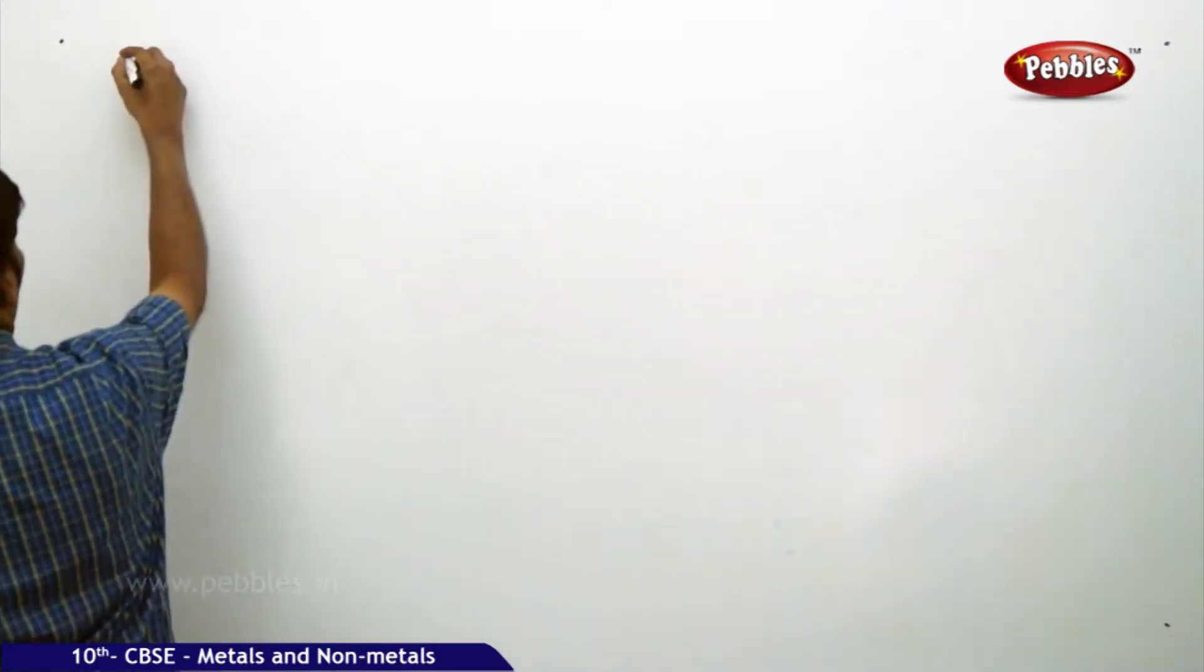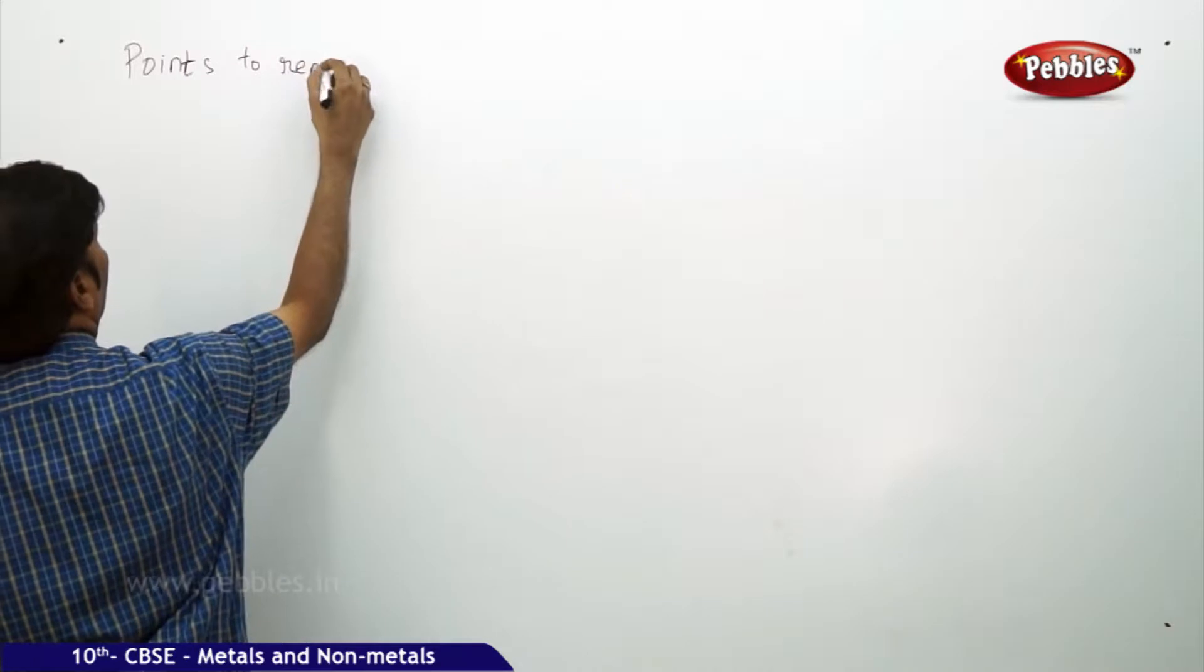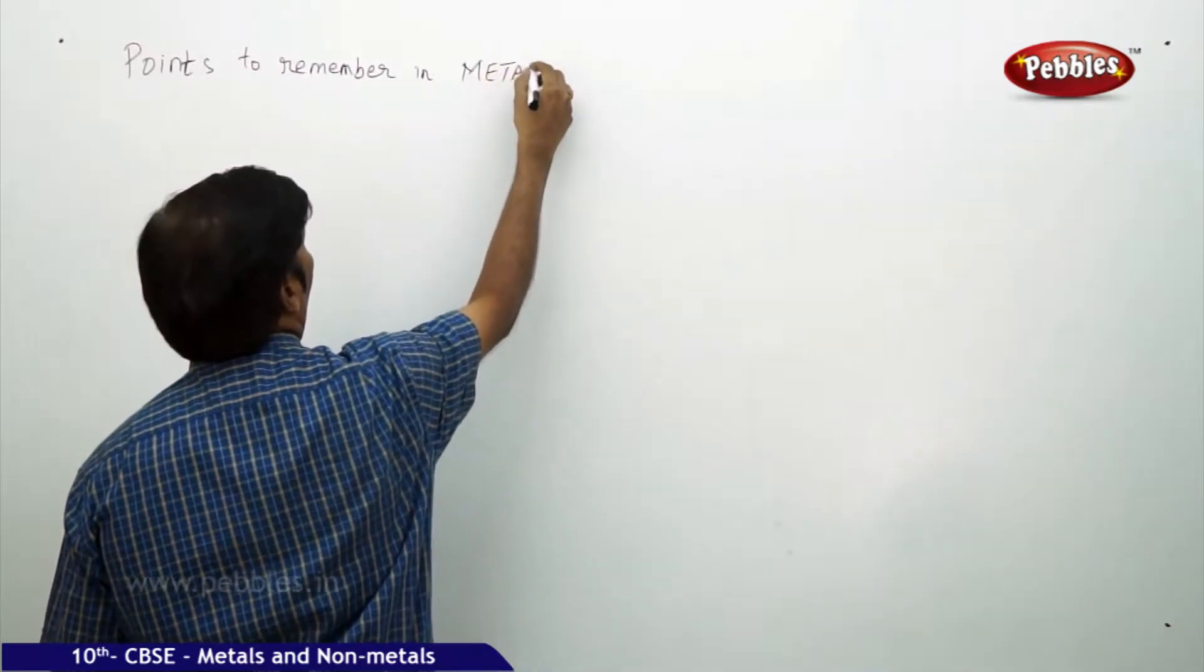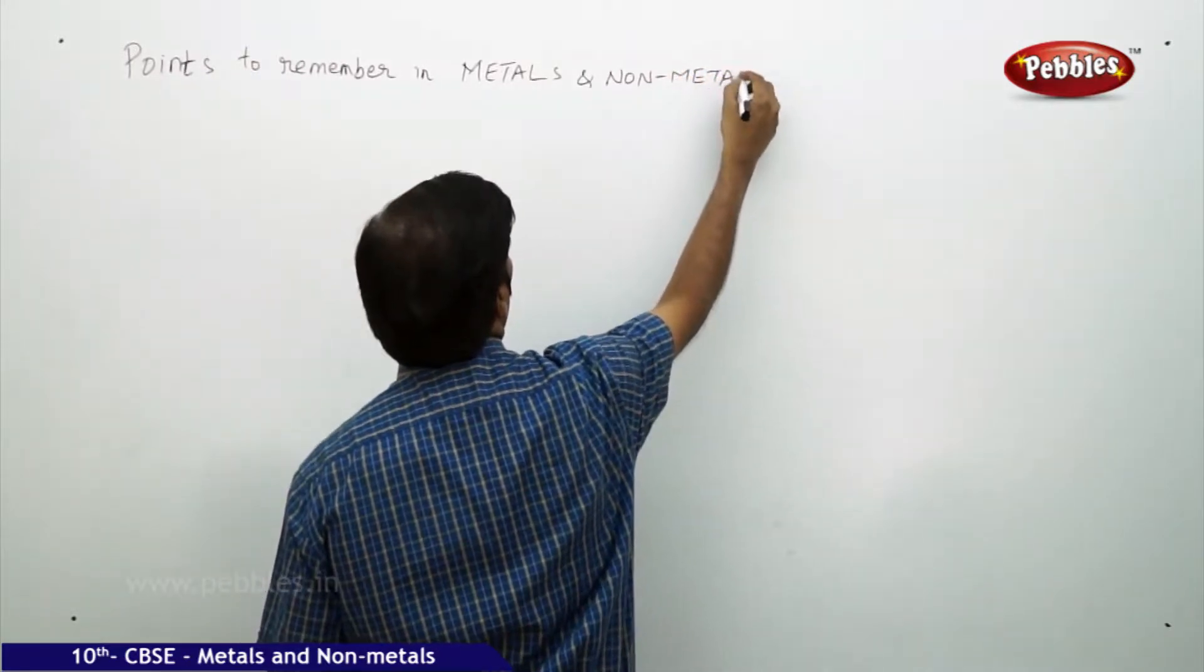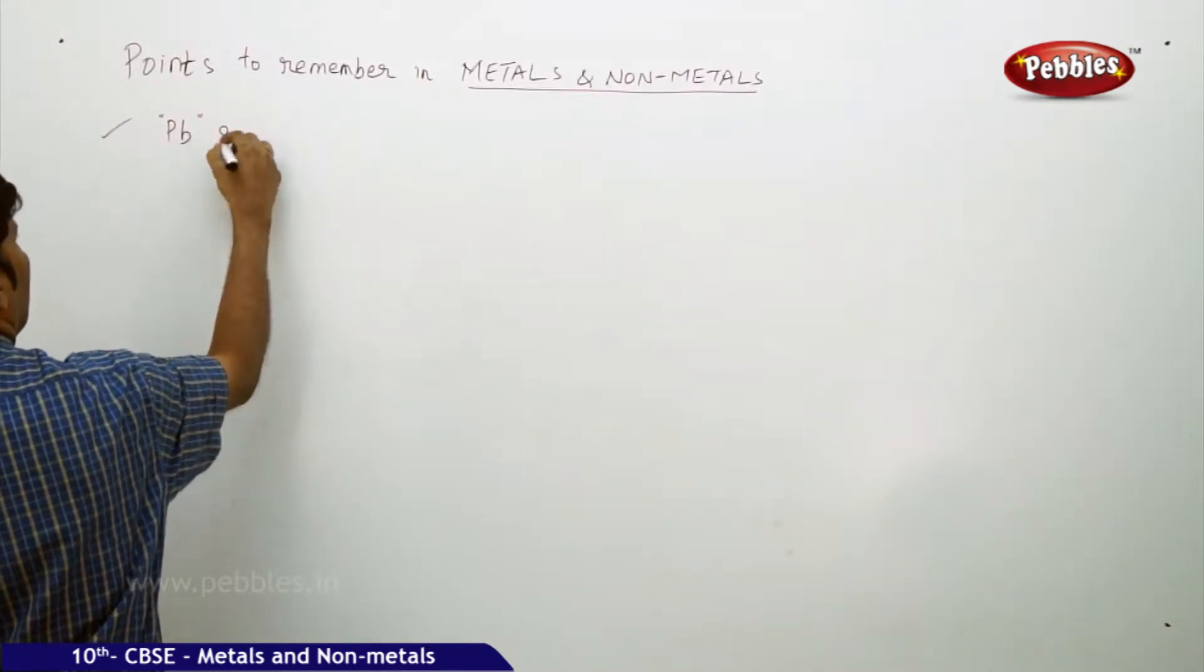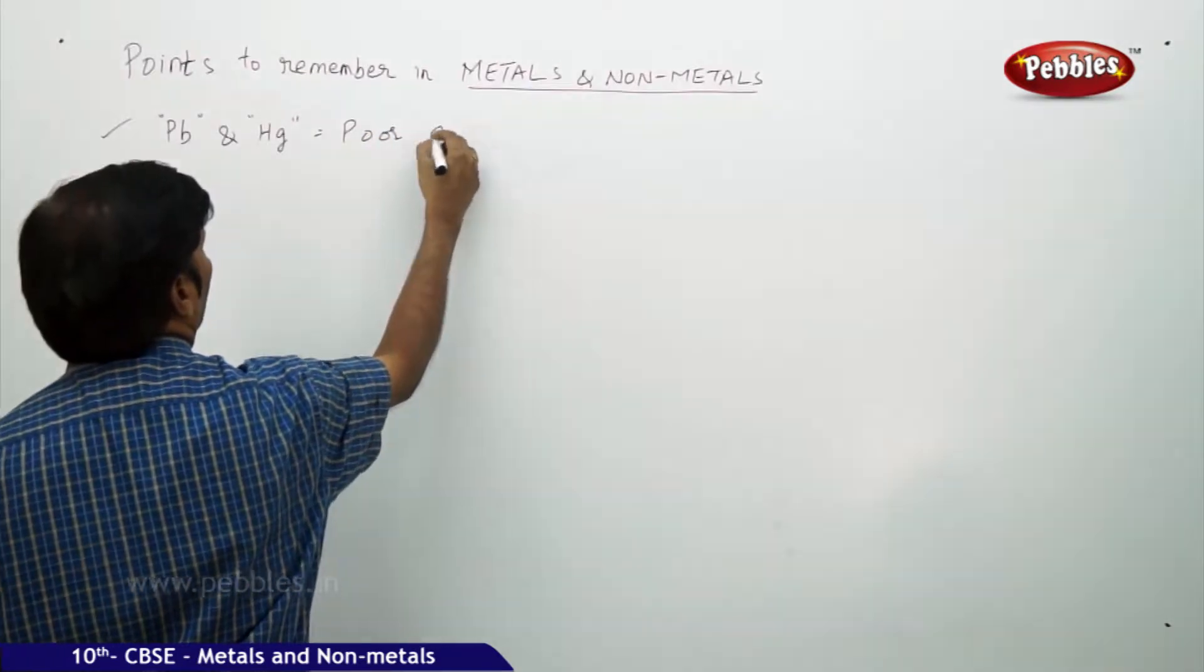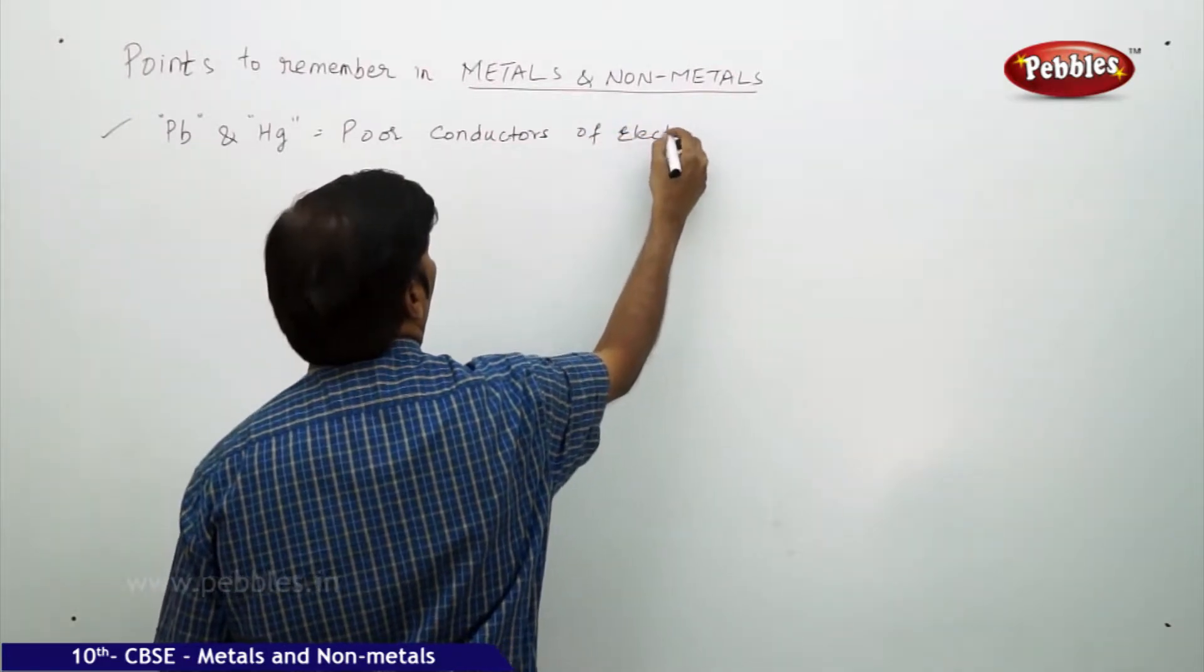The next part of the discussion is points to remember in metals and nonmetals. If we take lead and mercury, they are poor conductors of electricity.